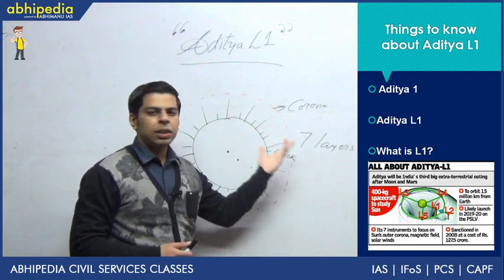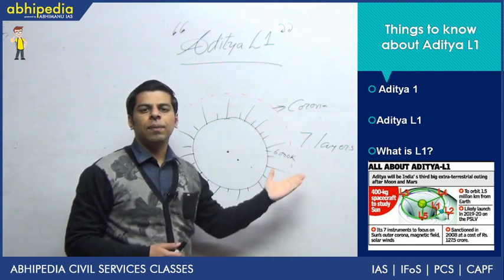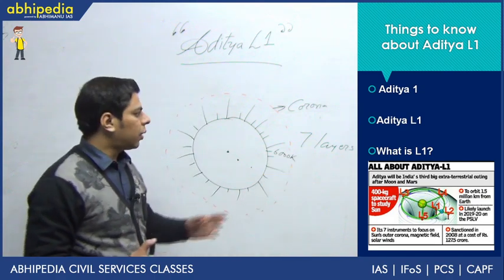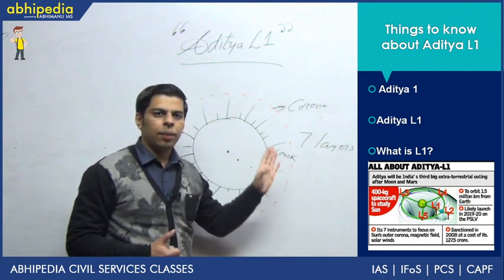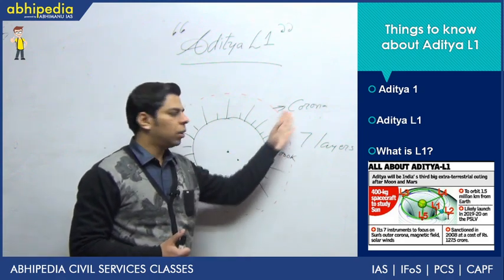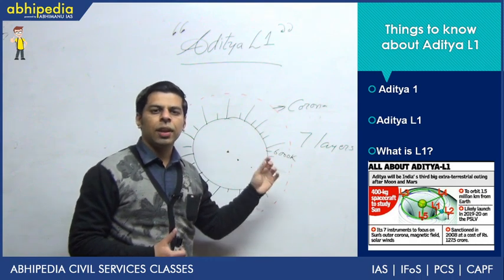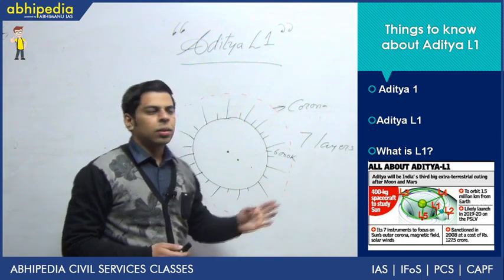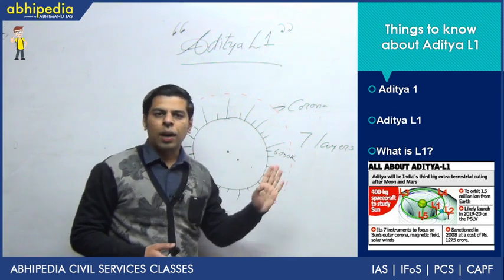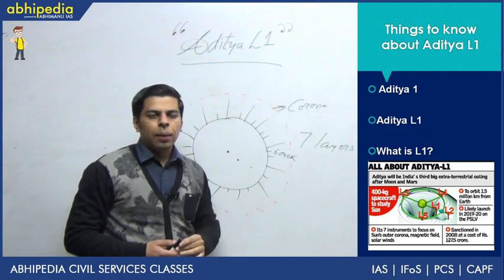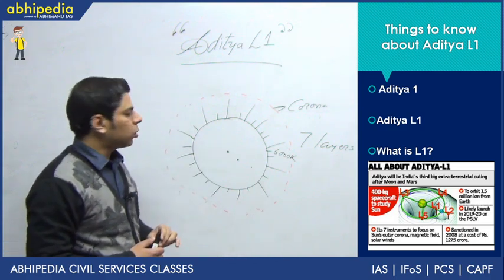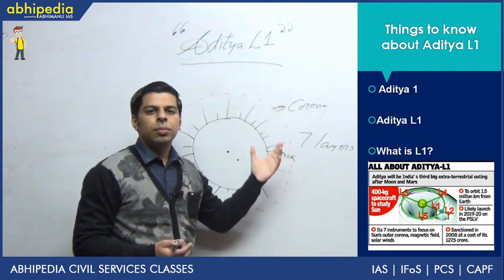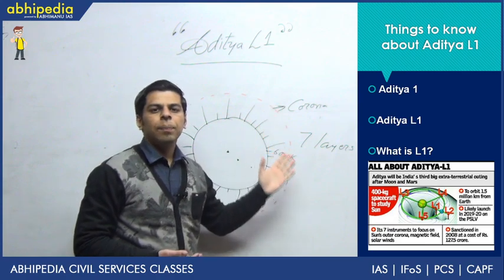Aditya L1 will also study the photosphere, chromosphere, and of course the corona. It is sent by PSLV — the Polar Satellite Launch Vehicle — as originally planned. In the exam they might try to confuse you with the launch vehicle, so be thorough. It is a light payload mission in which scientific instruments to study the various layers of the sun are being sent, and the budget allocated is now running into hundreds of crores — 175 crores to be precise. The distinguishing feature from Aditya 1 is the L1 designation.